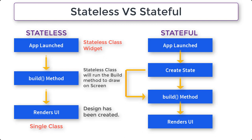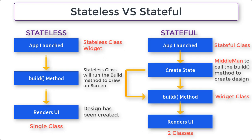In stateful widgets, we have two classes. The first class is similar to the stateless class — it extends the stateful widget, but it's not going to override the build method this time. Instead, it hires a middleman and assigns that middleman the task of redesigning or calling the build widget, so we can change the design whenever we want. The second class inherits the build widget, while the first class inherits the state object. This middleman is going to redraw every time the user interacts with the application.